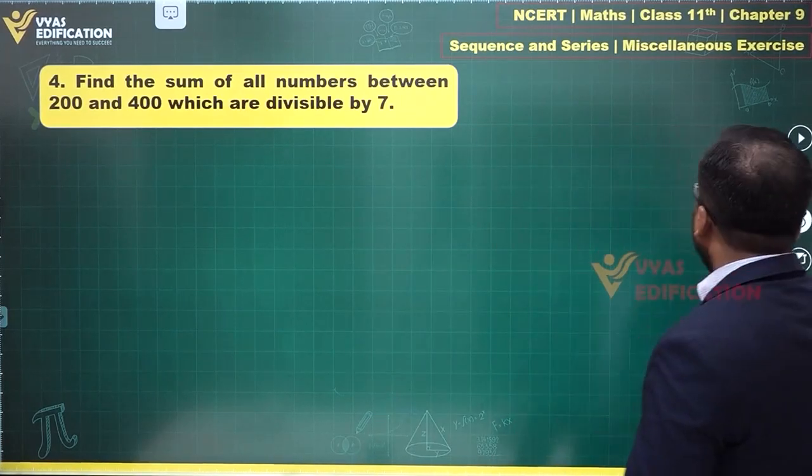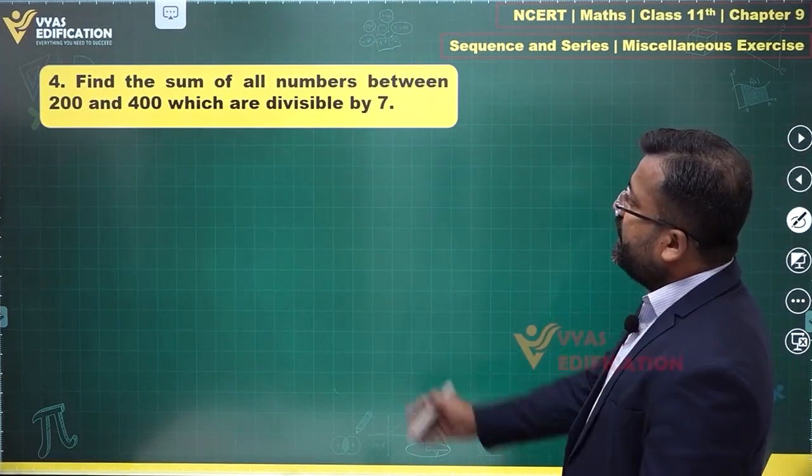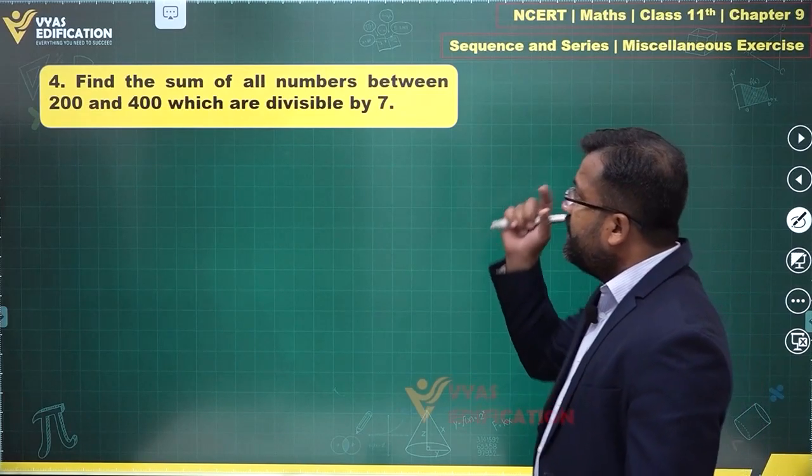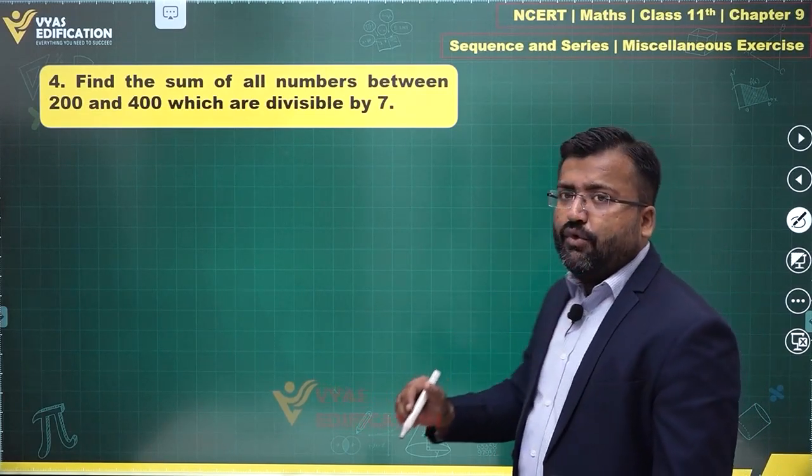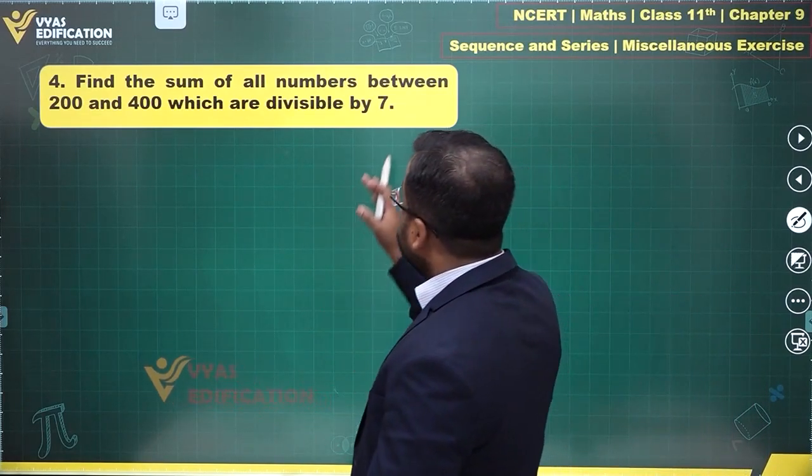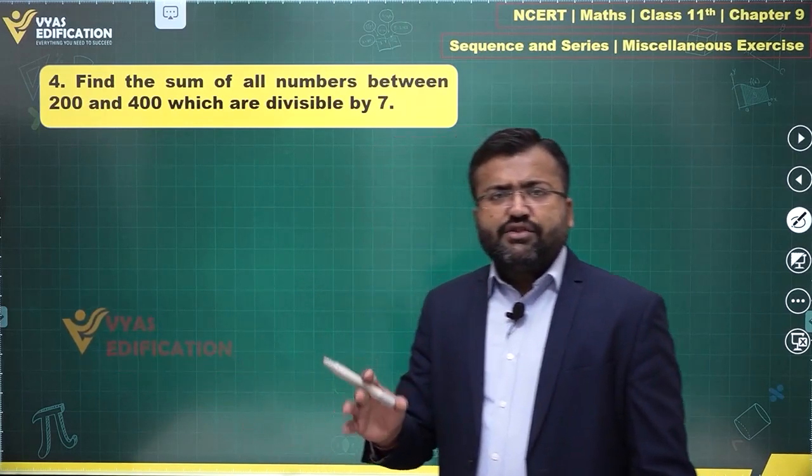Question number four says find the sum of all numbers between 200 and 400 which are divisible by seven. So, is 200 divisible by seven?